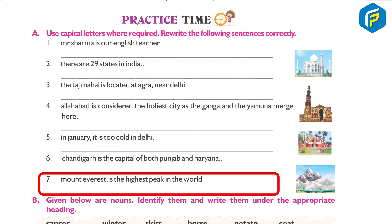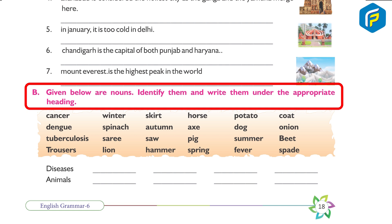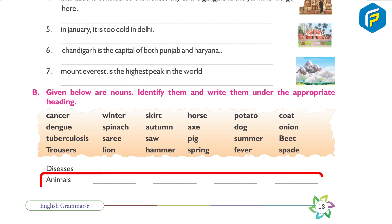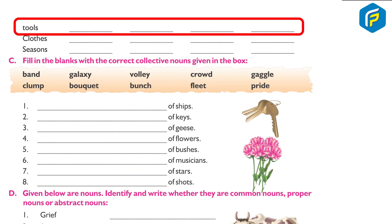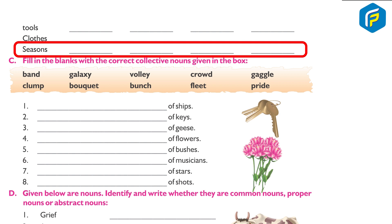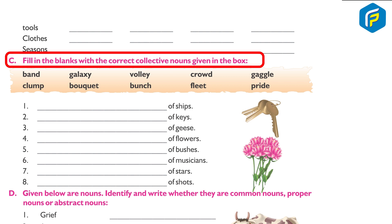Answer: Do it yourself. (B) Given below are nouns; identify them and write them under the appropriate heading. Answer: diseases — cancer, dengue, tuberculosis, fever; animals — lion, horse, pig, dog; tools — saw, hammer, axe, spade; clothes — coat, saree, skirt; seasons — spring, autumn, winter, summer.